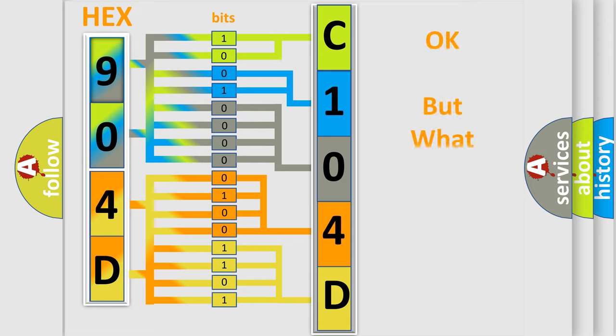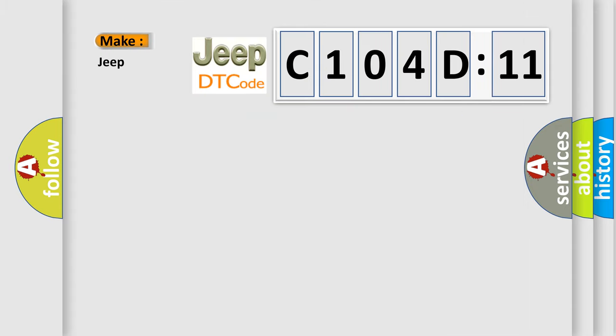The number itself does not make sense to us if we cannot assign information about what it actually expresses. So, what does the diagnostic trouble code C104D11 interpret specifically for Jeep car manufacturers? The basic definition is: TR sensor circuit malfunction.